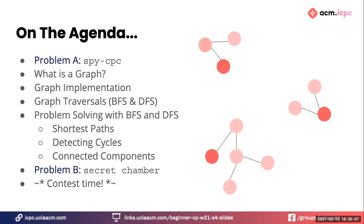Today we're going to switch it up a bit. This is beginner's track and there are a lot of different difficulty levels. Maybe you've heard of graphs and know a lot about them, or maybe you don't. Either way, you're going to start with a graph problem — no coding required — to help you understand how we use graphs in problem solving.